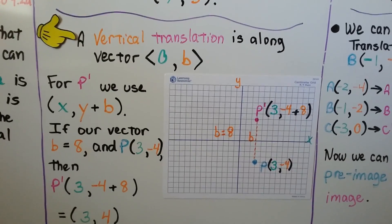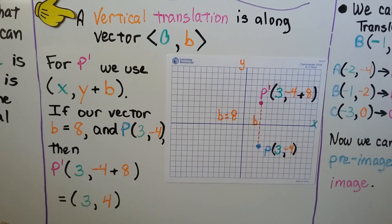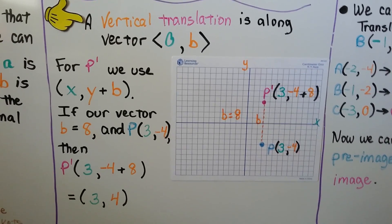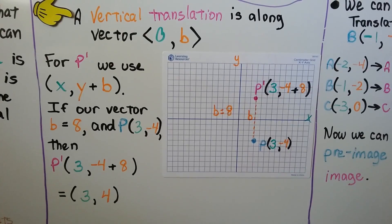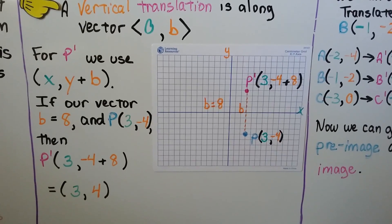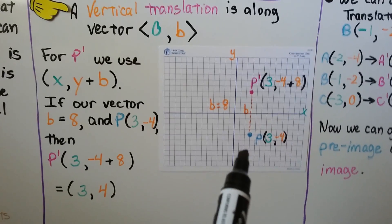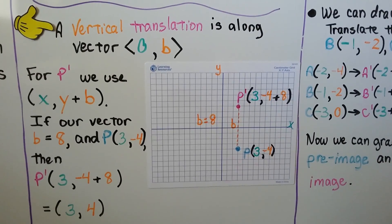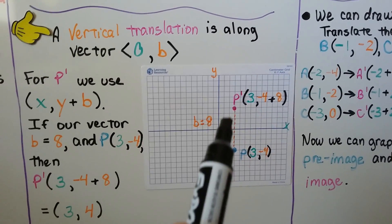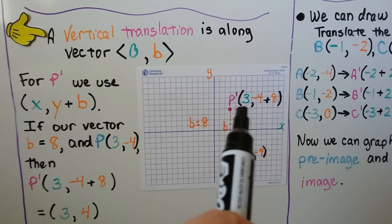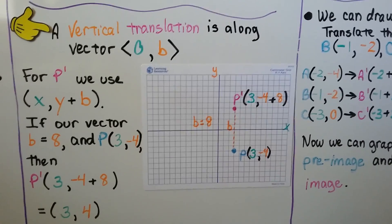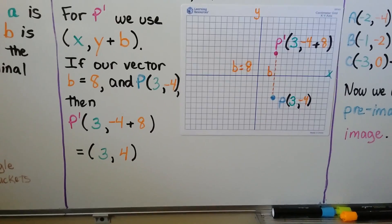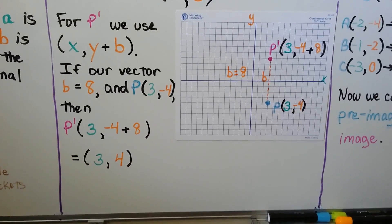A vertical translation is along vector <0, b>. Now there's going to be a vertical change — whatever the value of b is — and the horizontal stays the same because we're adding zero. For P prime, we use (x, y + b). Looking at the diagram, our pre-image P is at (3, -4), and b equals 8. So P prime is going to be at (3, -4 + 8), which is (3, 4), because negative 4 plus 8 is 4.